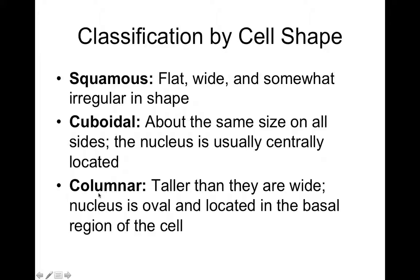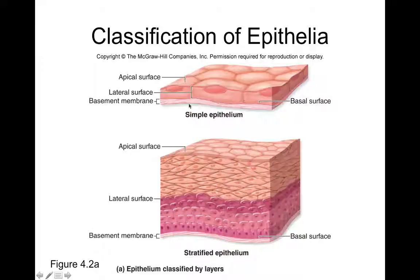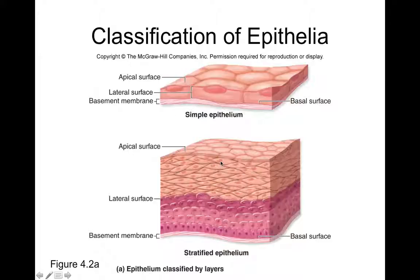Looking at examples: a single layer of flat cells would be simple squamous, while a tissue with multiple layers is stratified squamous. Stratified epithelia are classified by the shape of the cells at the apical surface, not the basal surface. Even if the basal cells look cuboidal, if the apical cells are squamous, the tissue is called stratified squamous — not stratified cuboidal.